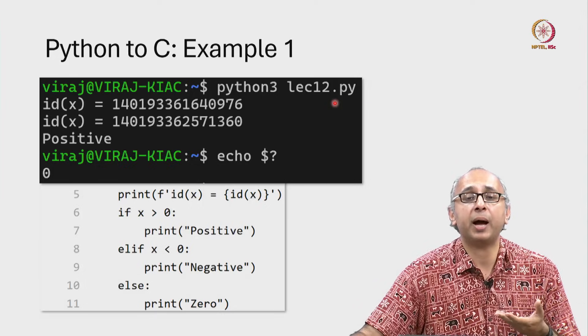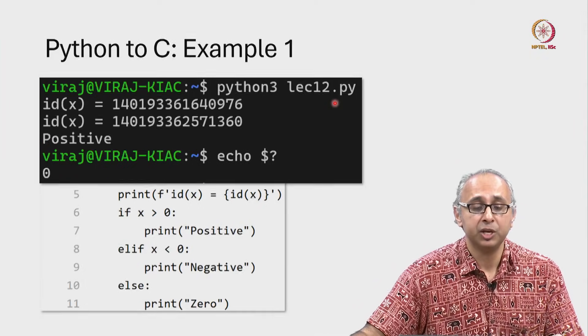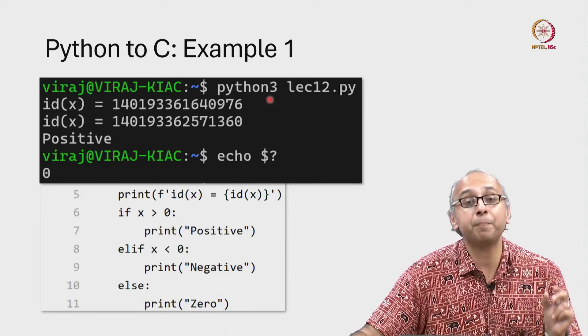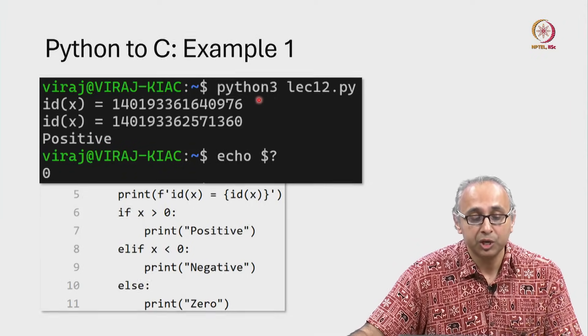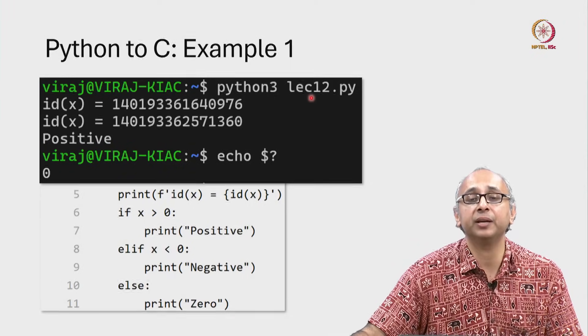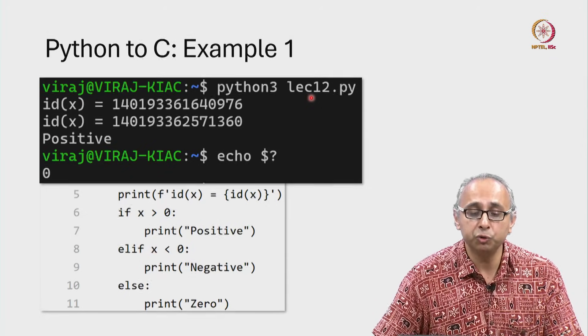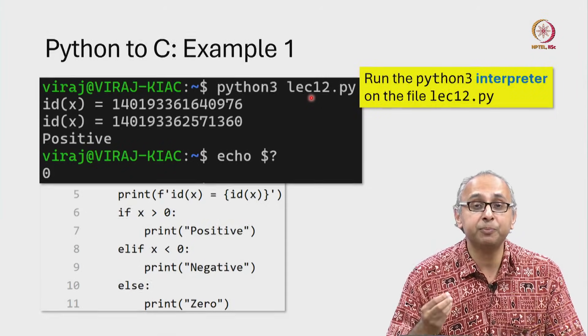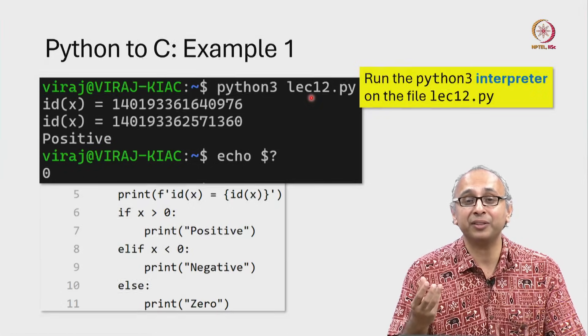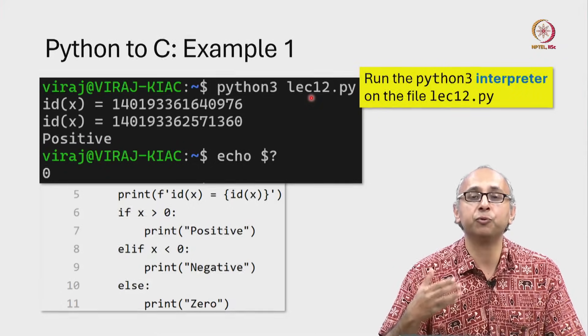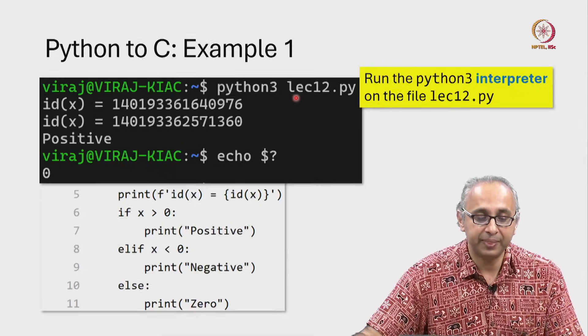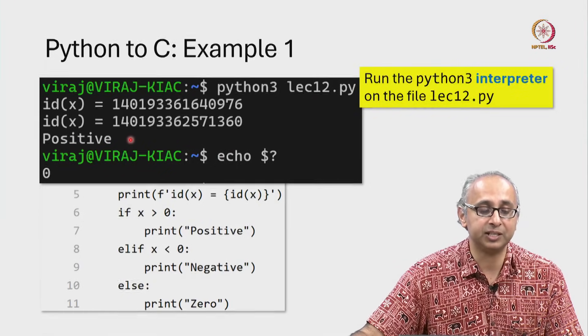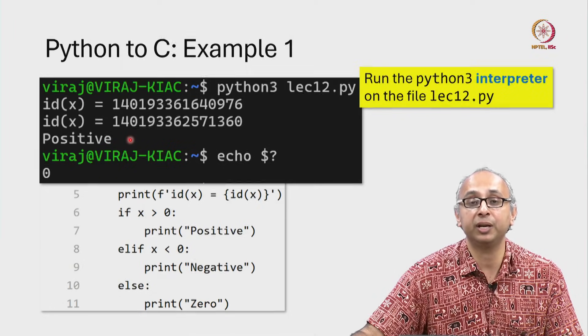I'm running this on my Linux system. There I have a program called Python 3. This is the Python 3 interpreter. So now I'm executing this Python code using my Python interpreter. That interpreter is interpreting that Python code into machine code and immediately running it on my system, and that is printing these two different id values and lastly it is printing this string positive.